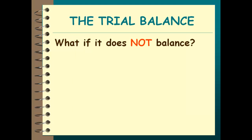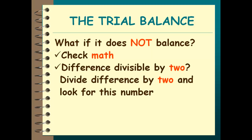What if it doesn't balance? If the total of your debits and the total of your credits doesn't equal, first off, just check your math — you could have added wrong or subtracted wrong. Secondly, see if your difference is evenly divisible by two. For example, if I took a $100 debit and I accidentally put it in the credit column, that would throw me off not by 100, but by 200. If I have a difference of 200 divided by 2, go looking for that number — see if you put something in the wrong column.